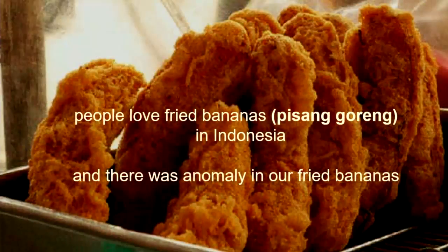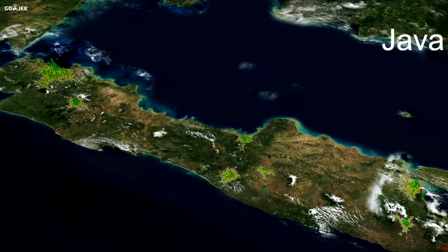In Indonesia, people love this thing called fried banana. And there was an anomaly in our fried banana data — a very simple one that we could not figure out: one location had something wrong with it.